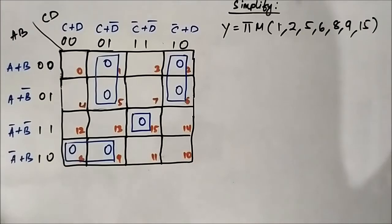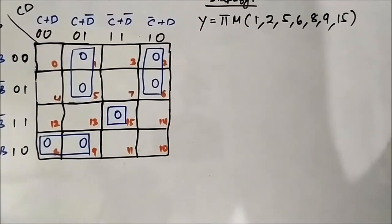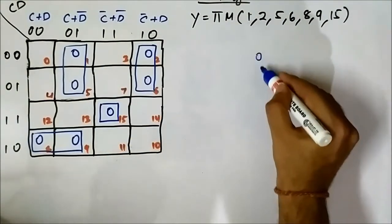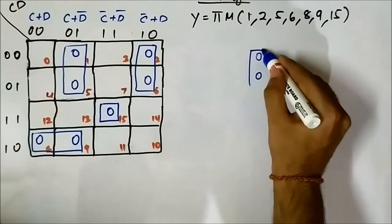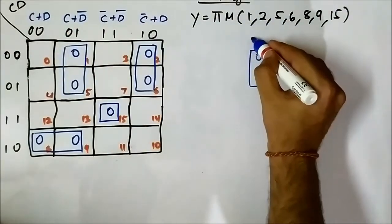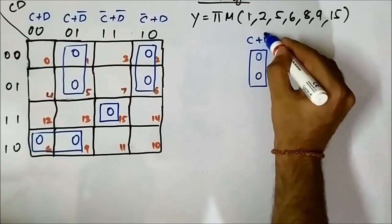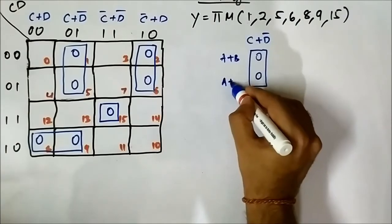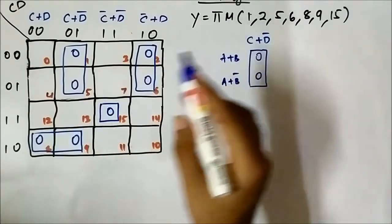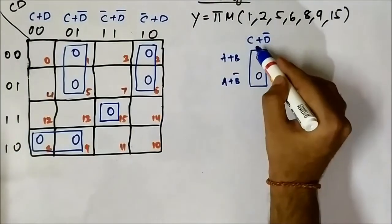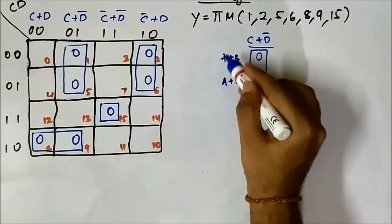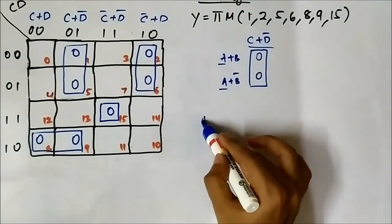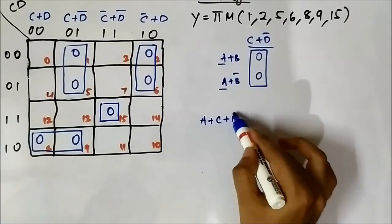Now we have to identify the common variables from these groups. Let us consider this first pair. The vertical component is C or D bar. The horizontal components are A or B, A or B bar. In the vertical side we have C or D bar, and in the horizontal side we have A common. So for this it is A or C or D bar.